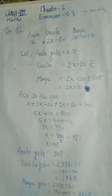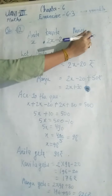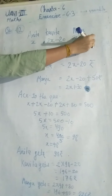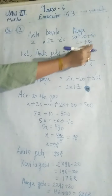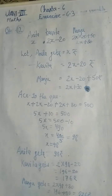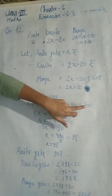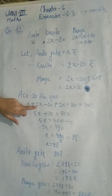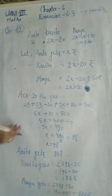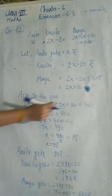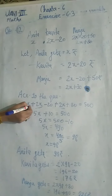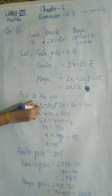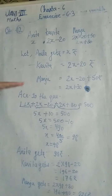Kaise aaye yeh teeno? Anita = x, Kavita = 2x - 20, Manju = 2x - 20 + 50 = 2x + 30. Theek hai — solve karne par yeh aa gaya. According to the question, 500 rupees ko distribute karna tha in teenon mein. Toh in teenon ka sum kitna hoga? 500 hoga. Yeh Anita ka hai, yeh Kavita ka hai, yeh Manju ka hai — teeno ko add kiya.